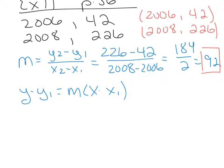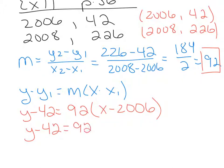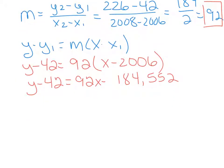And I'm going to fit them in as y minus 42 equals, there's the m, 92, x minus 2006. We're going to distribute, simplify, y minus 42 equals 92x minus, this comes out to be 184,552. You can get your calculator out to check that if you want. Still simplifying.